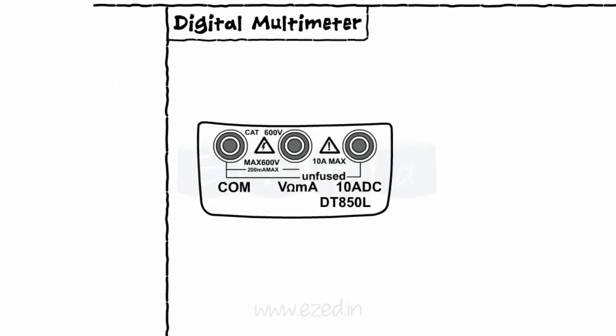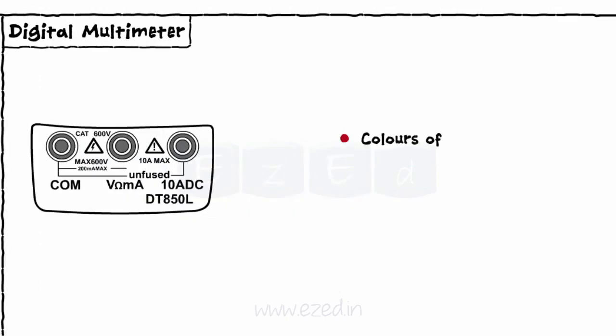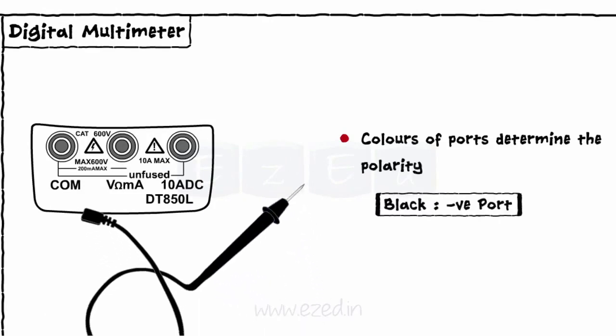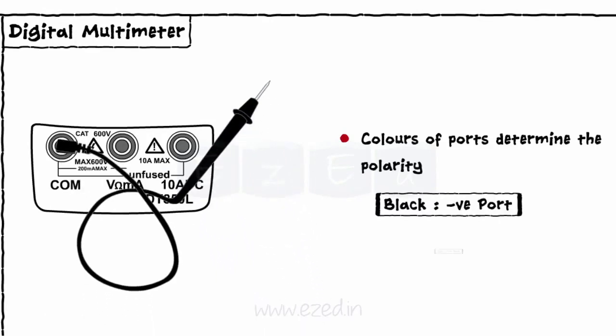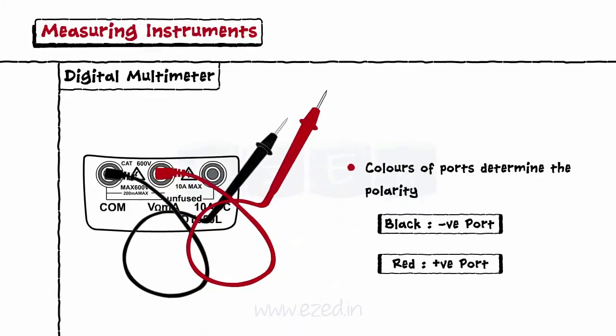The input jacks, or ports, of a meter are the working ends of the instrument. The colors of the ports determine their polarity. Black wire is used as a negative port, and the red wire is used as a positive port.